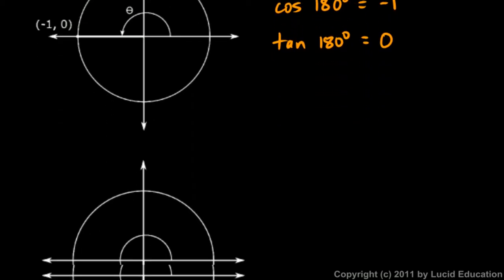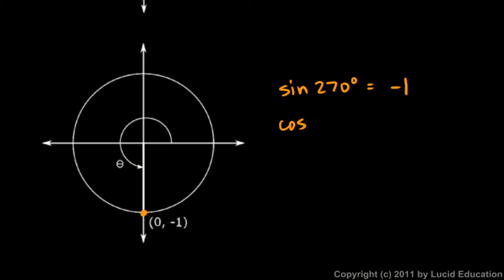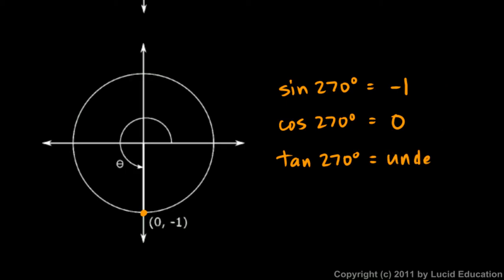For a 270 degree angle, that puts us at the point (0, -1). The sine of a 270 degree angle is the y-coordinate, which is negative 1. The cosine is the x-coordinate, which is 0. The tangent of a 270 degree angle is y over x, so negative 1 over 0 — again, it is undefined.